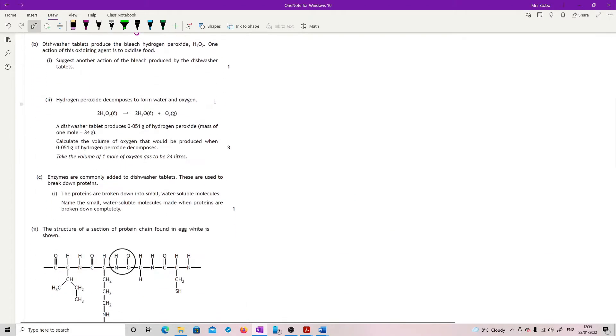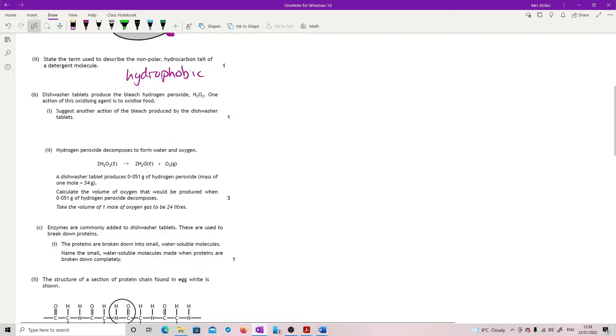Dishwasher tablets produce the bleach hydrogen peroxide. One action of this oxidizing agent is to oxidize food. Suggest another action of the bleach produced by the dishwasher tablets.